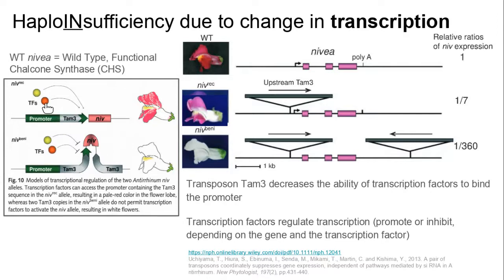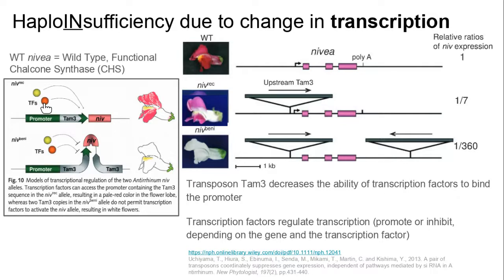If there's a mutation in the transcription factor, can it impact the transcription of this gene? This is the Nivea gene, and we can call this other gene the palm olive gene or whatever. So this protein is not encoded by the Nivea gene — it's encoded by some other gene — and its function in the cell is to serve as a transcription factor for the transcription of this gene, which encodes Chalcone synthase. So if I have a mutation on that other gene, can it impact the transcription of this gene?